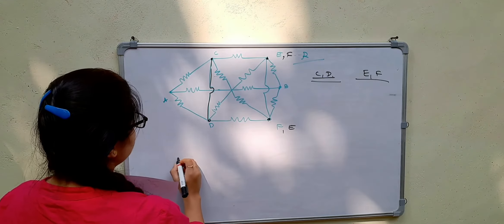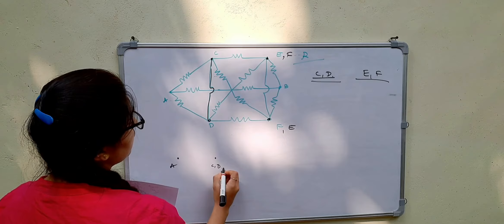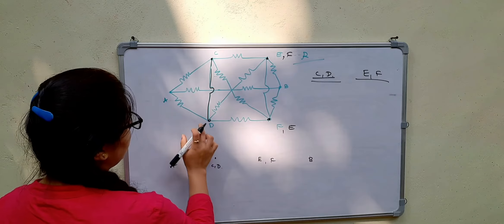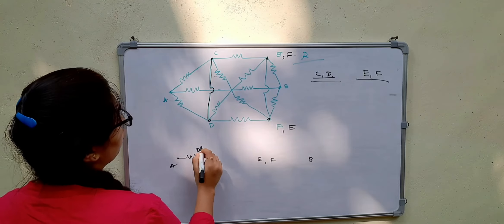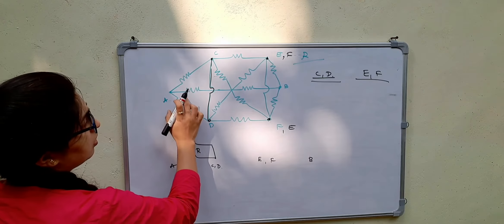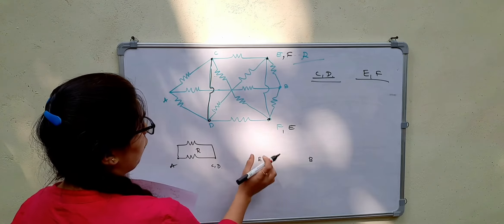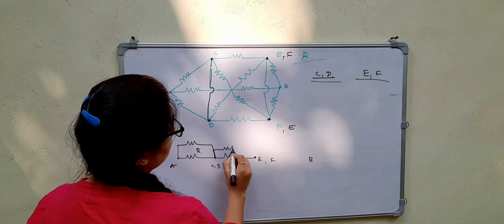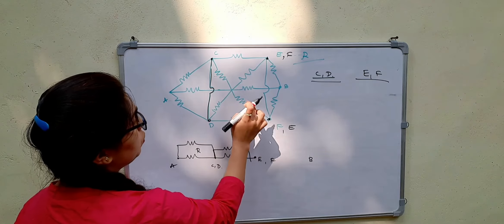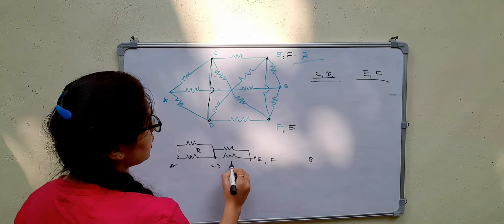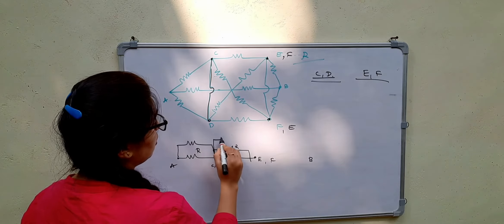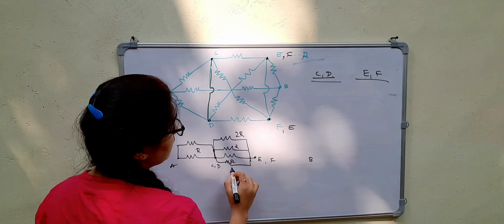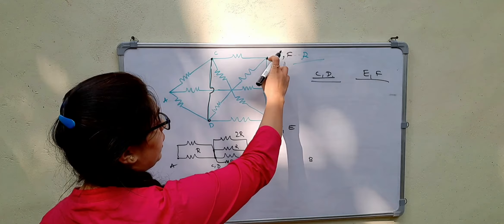From A to D and A to C we each have one resistor R — these are in parallel giving R/2. From D to F and C to E we each have one resistor R — also in parallel giving R/2. From C to F and D to E we have two resistors in series each, giving 2R each — those two 2R's are in parallel giving R.